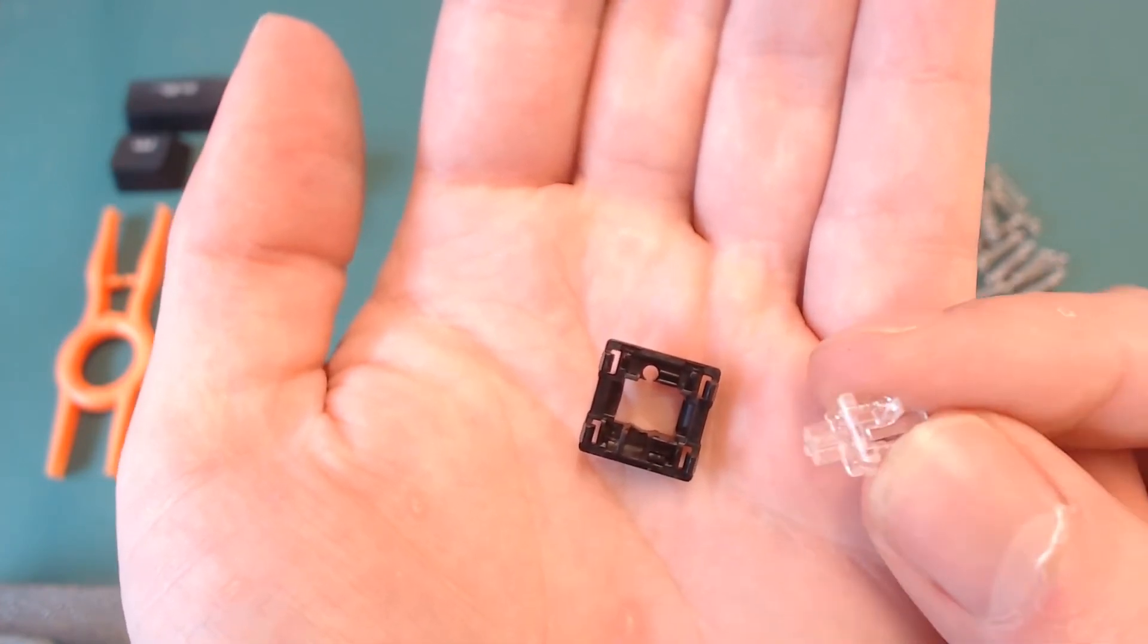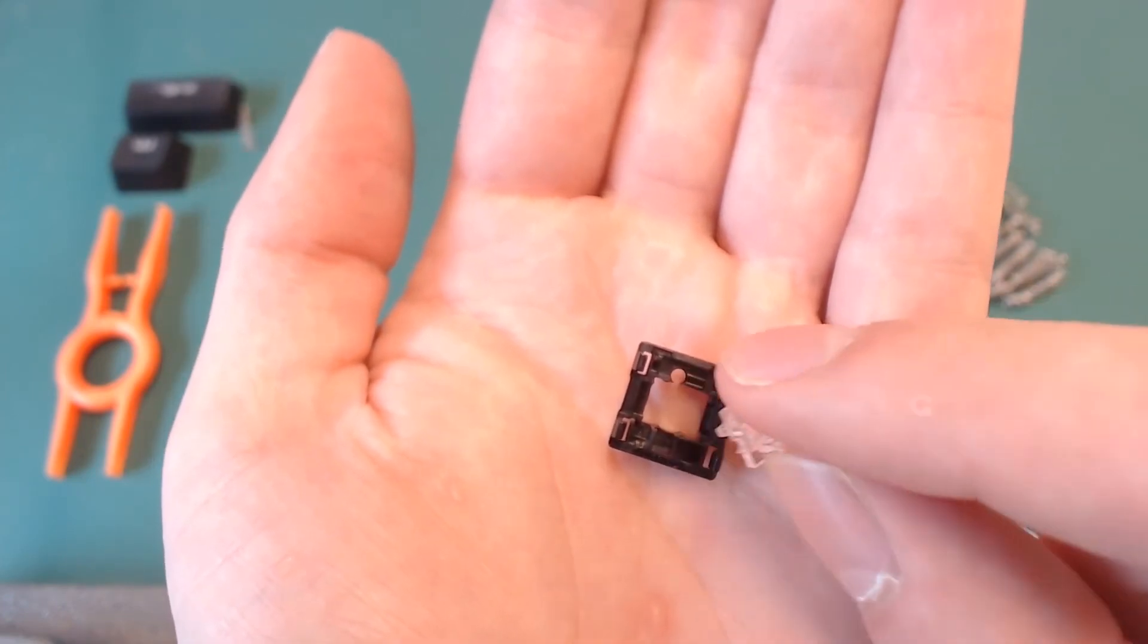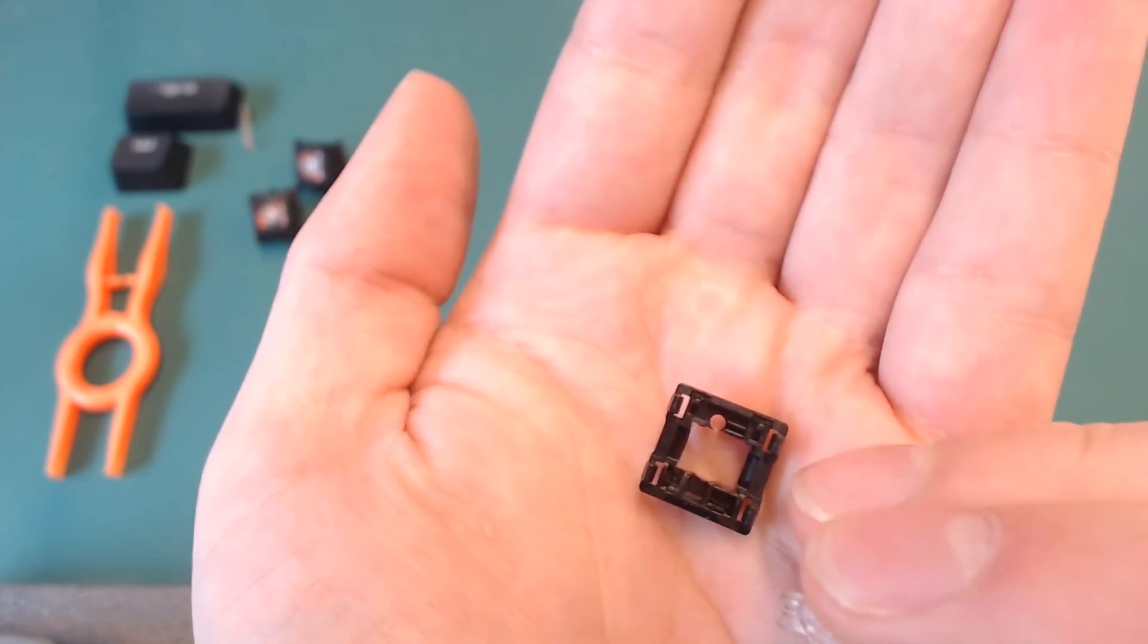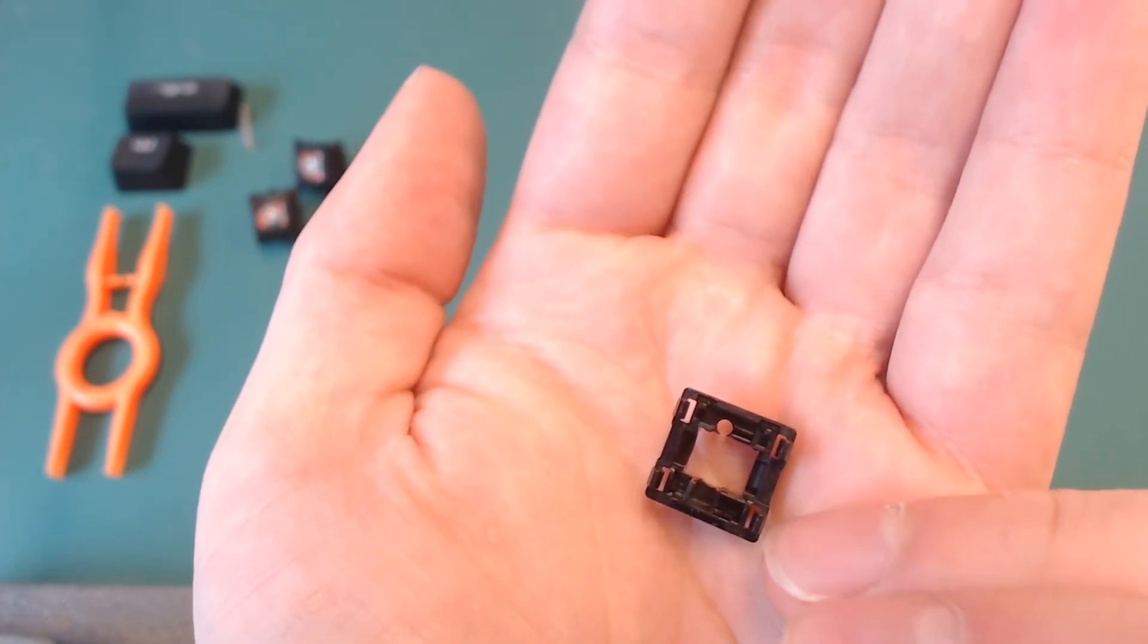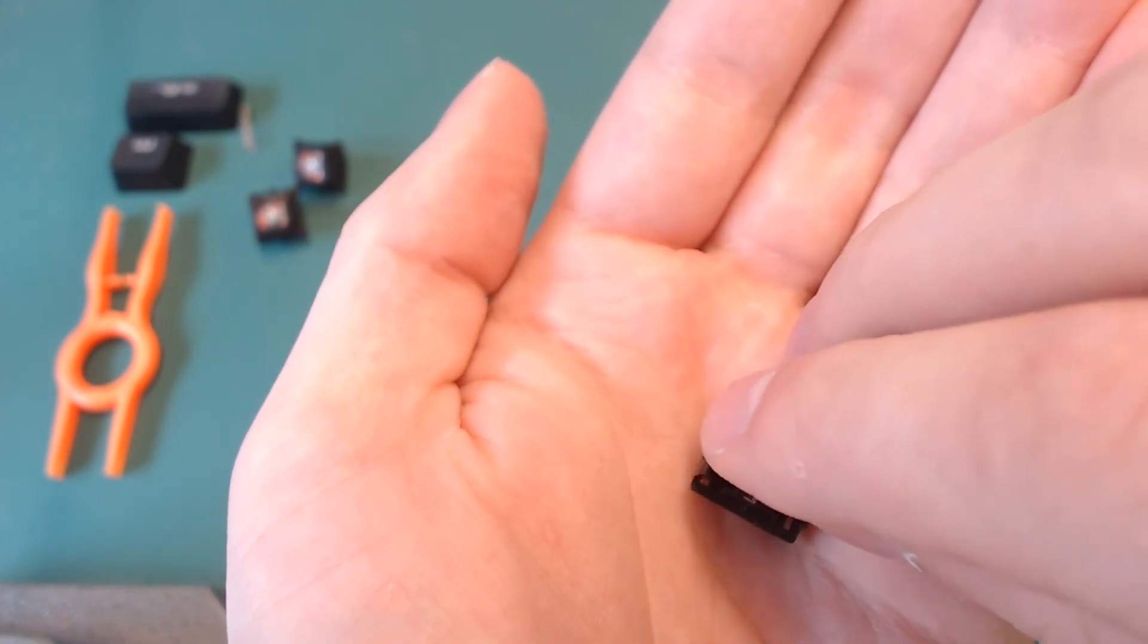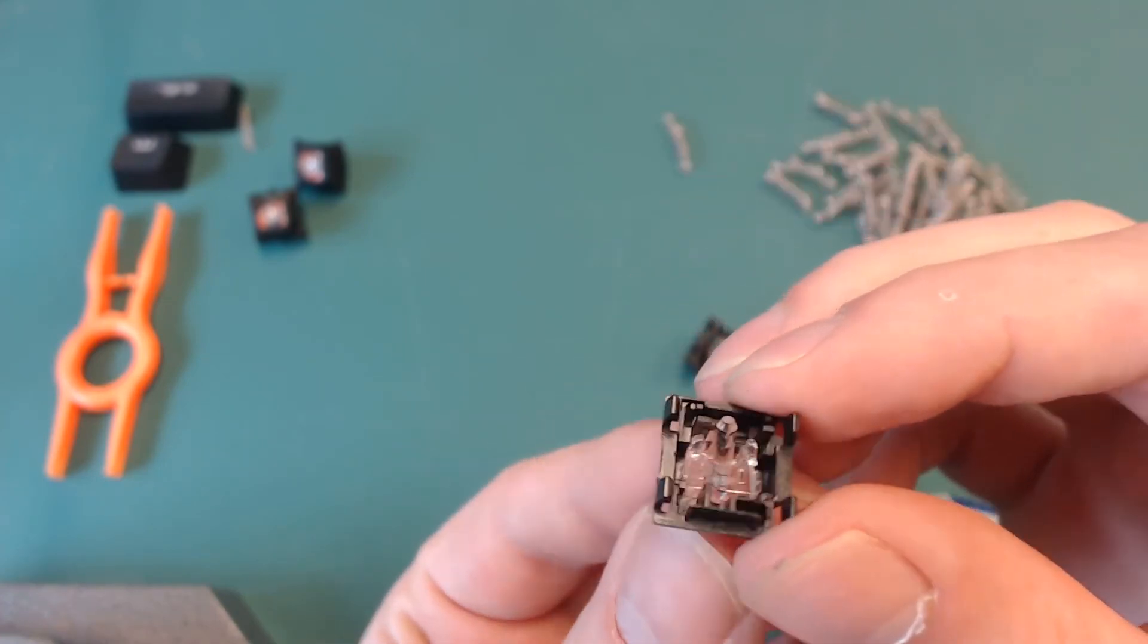Simply turn it around so the thing for the keycap, the MX stem, is on the bottom and drop it in. Make sure the prism is going to the solid bit of the housing, not to the circle but to the solid bit. If you just drop it in, it should fall in place and that's it.